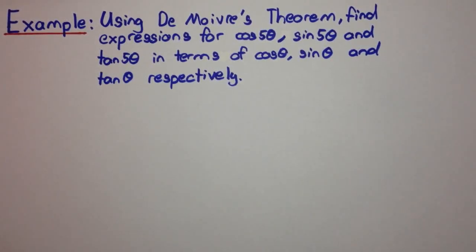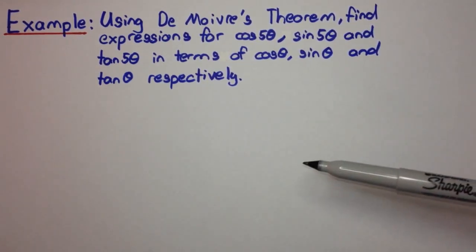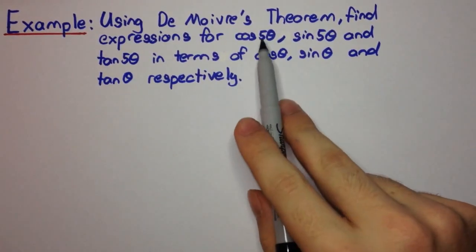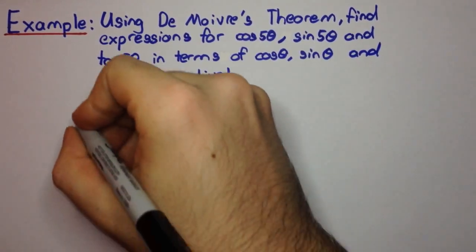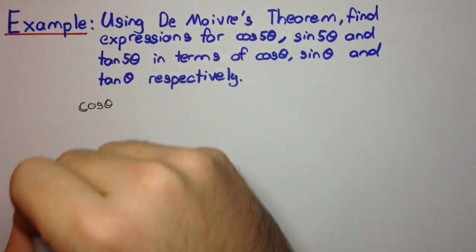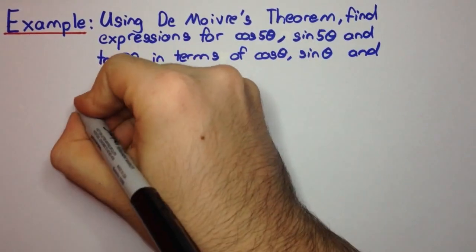Welcome to today's video everyone. In this example we'll be seeing how to apply De Moivre's theorem to find expressions for cos 5θ, sin 5θ, and tan 5θ in terms of cos, sin, and tan respectively. It says to use De Moivre's theorem so we already have a hint. We want cos 5θ and sin 5θ, so that suggests we should consider the expansion of (cos θ + i sin θ) to the power 5.